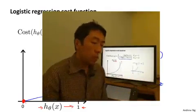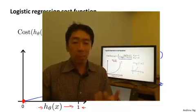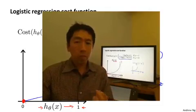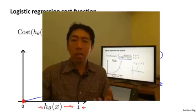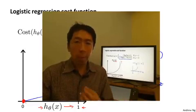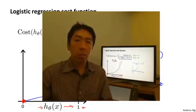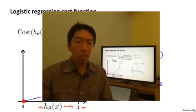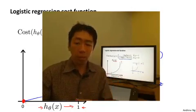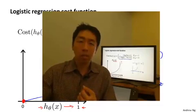In this video, we've defined the cost function for a single training example. The topic of convexity analysis is beyond the scope of this course, but it is possible to show that with our particular choice of cost function, our overall cost function j of theta will be convex and local optima free. In the next video, we'll take these ideas and develop them further to define the cost function for the entire training set, find a simpler way to write it, and work out gradient descent to give us our logistic regression algorithm.